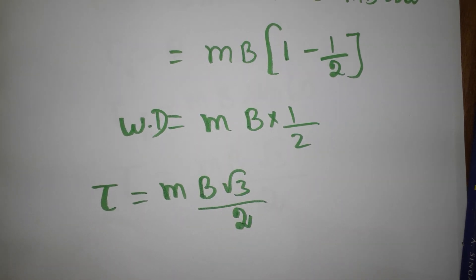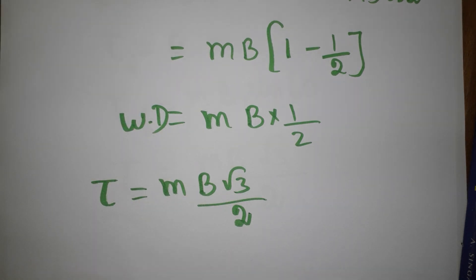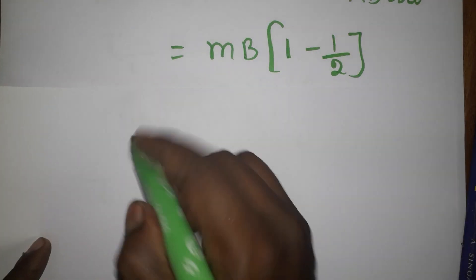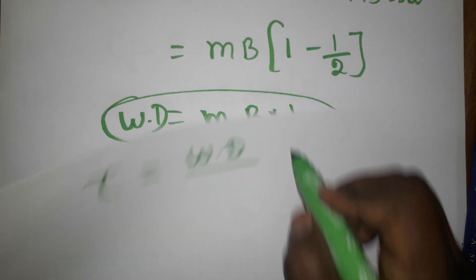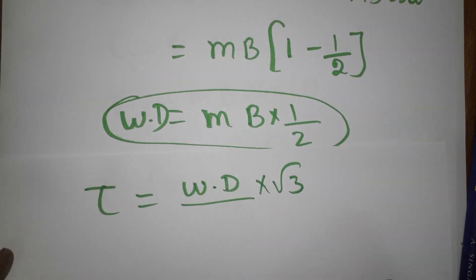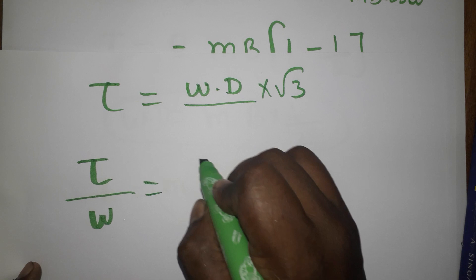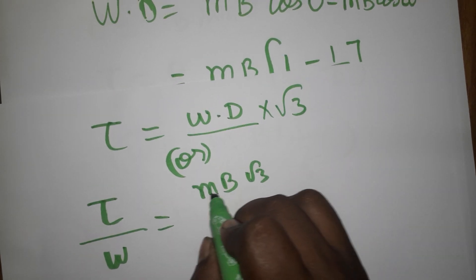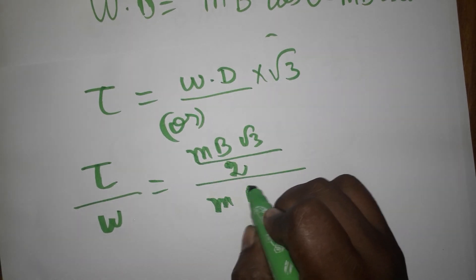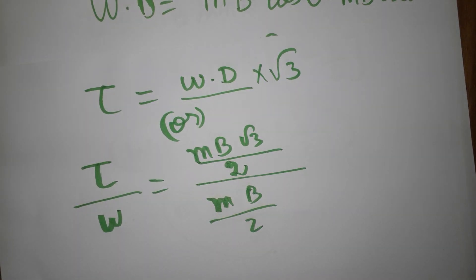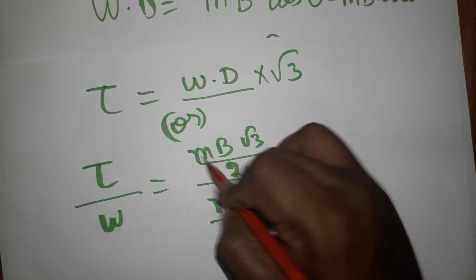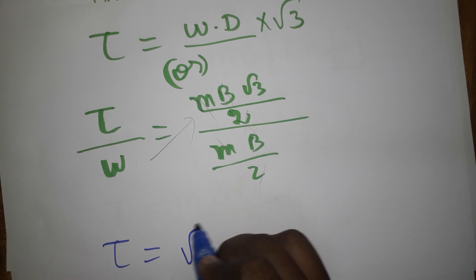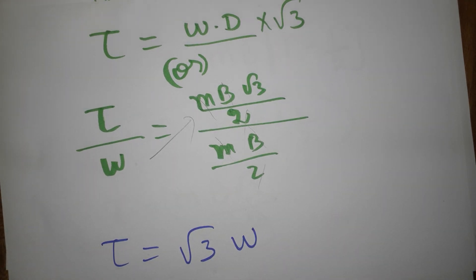Now we have to find the relation between torque and work done. We know work done is MB/2. Torque is MB√3/2. Dividing torque by work done: (MB√3/2) ÷ (MB/2), the MB and 2 cancel out, giving us torque equals √3 times work done. This is option four, which is the correct answer.